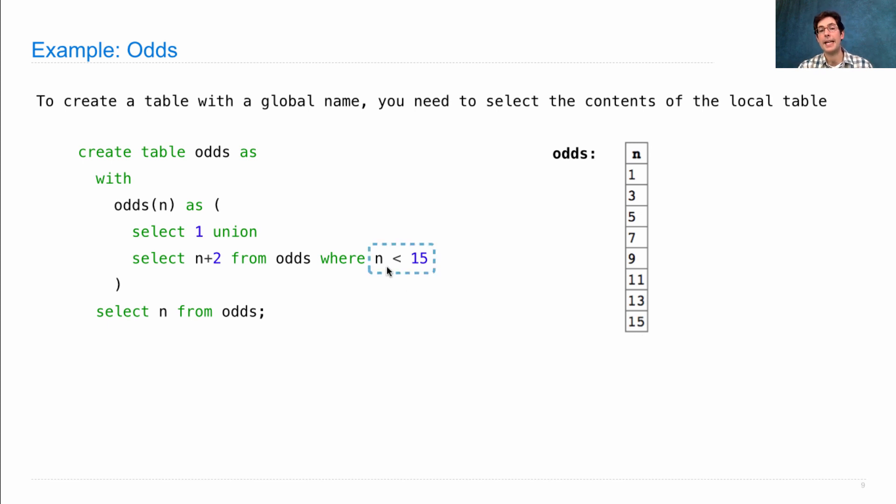Now it's interesting that this says n is less than 15. Well, the input rows n is less than 15. It says the last input row I'm interested in is 13. And so that's a filtering on odds. And then we add n plus 2, which is 15, to the table.